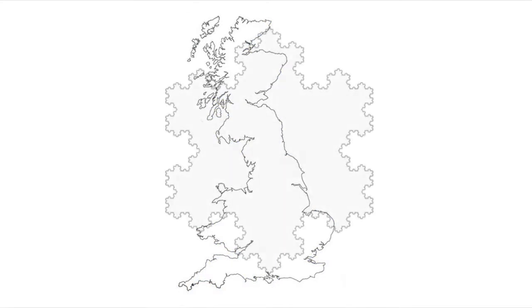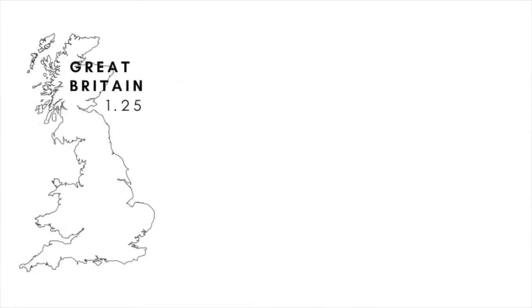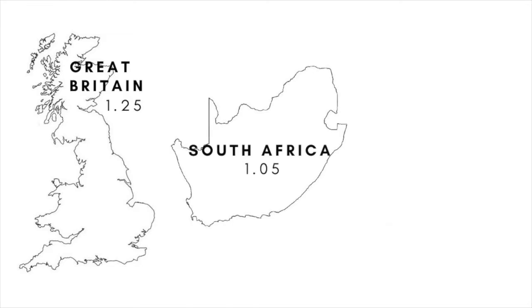the fractal dimension of the coastline of Great Britain turns out to be about 1.25, remarkably similar to that of the Koch Snowflake. South Africa, by comparison, has a much smoother coastline and a correspondingly lower fractal dimension of 1.05.